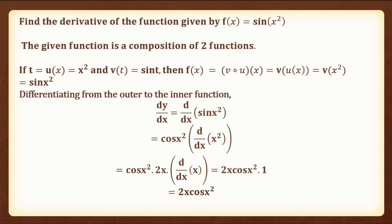Now differentiating from the outer function to the inner function, dy by dx is equal to d by dx of sin x squared. The differentiation of sin x squared will give us cos x squared into d by dx of x squared, which will be equal to cos x squared into 2x into d by dx of x, which is equal to 2x cos x squared into 1, which is equal to 2x cos x squared.